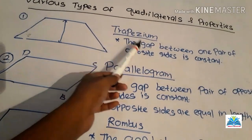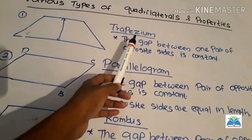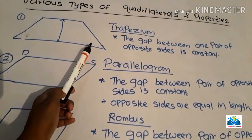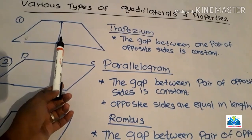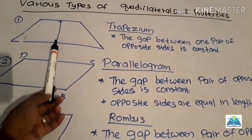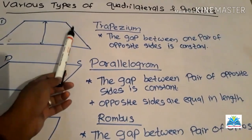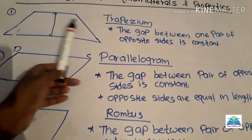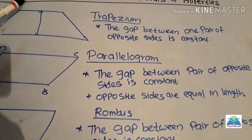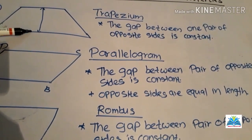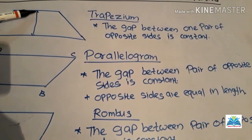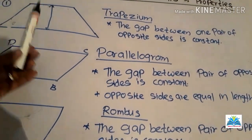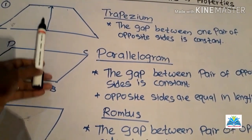The first type is trapezium. A trapezium has four sides and four angles — it is a quadrilateral. The gap between one pair of opposite sides is constant, meaning the distance between those two lines does not change. If we say that distance is five meters, all points between those sides are five meters apart. Only one pair of opposite sides is parallel.